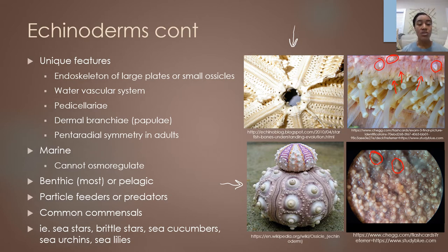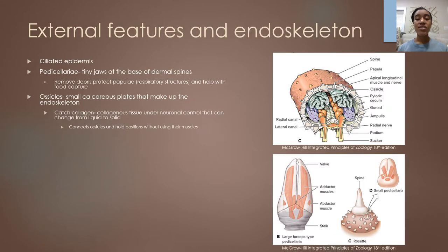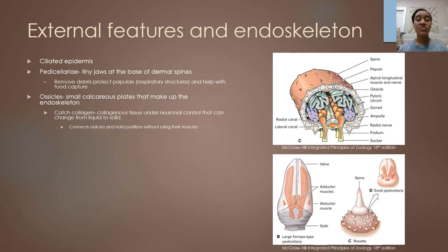Some examples of echinoderms are sea stars, brittle stars, sea cucumbers, sea urchins, and sea lilies. As we talk about echinoderm anatomy and physiology, we'll be using class Asteroidea as our model, which includes starfish. We're using this class as the model because various characteristics present within it are also present in various other echinoderm classes. When we get to other classes, key differences will be pointed out.